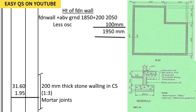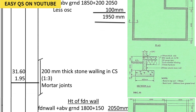To find the height of the foundation wall and build the wall, we find the area of the wall. The area is measured by taking the depth times the length. The length is the centerline of the wall, which we already found as 1.6. The depth of the foundation wall above the ground is 1850 plus 200, giving a total wall height. We deduct the concrete, which is 100, leaving 1950 millimeters. We then find the area: centerline times depth of the wall — 200mm big stone walling in cement-sand ratio 1:3 mortar joints.